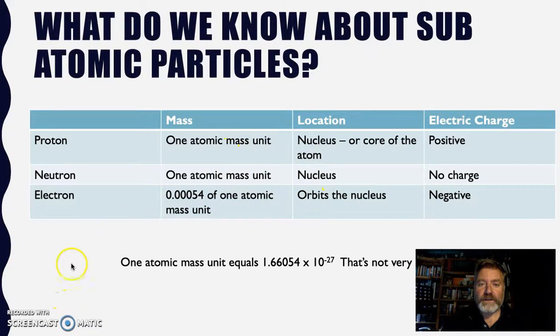Protons and neutrons are said to have one atomic mass unit. Now an atomic mass unit doesn't weigh very much. So you can see here one atomic mass unit equals 1.66054 x 10^-27.